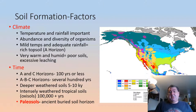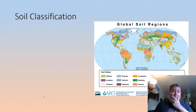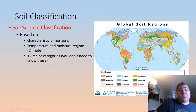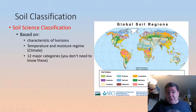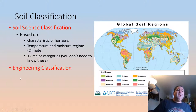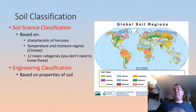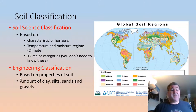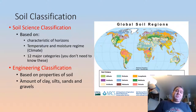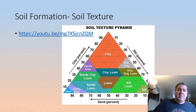There are two ways of classifying soils. The soil science classification, used by environmental scientists, looks at horizon characteristics and the temperature and moisture regime — essentially the climate — and breaks soils into 12 major categories. The key one to know is oxisols, which are those highly weathered tropical soils where we can get aluminum ore. The engineering classification is based on different properties of soils — primarily the amounts of sand, silt, and clay — and also considers strength and compressibility, which matters when you're building something on the soil.